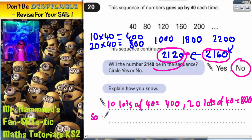So use this to work out that 2,200 is, and that is important that it is, in the sequence.